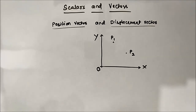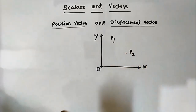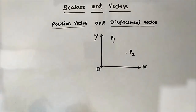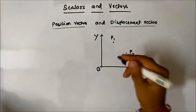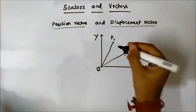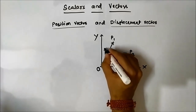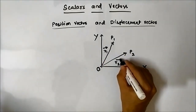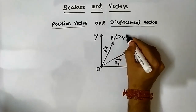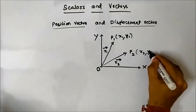So here two things come into play: first, how to represent the position of the initial and final points in terms of vectors, and how to represent the net displacement. Let us draw two arrowheads from the origin — arrowhead one and arrowhead two. Let us call them r1 vector and r2 vector. Let the coordinates of point P1 be (x1, y1) and the coordinates of point P2 be (x2, y2).